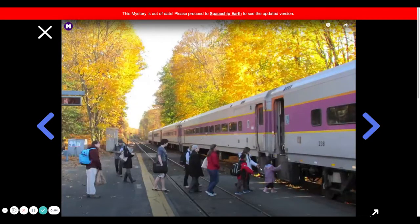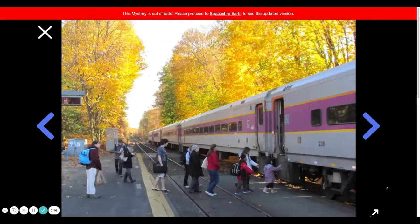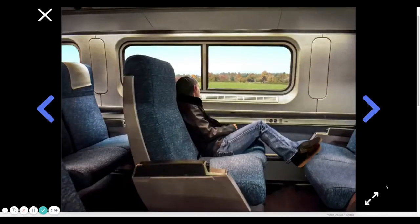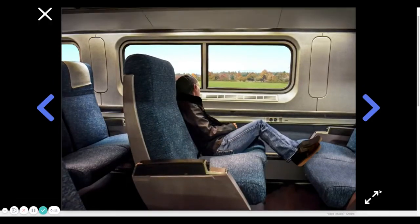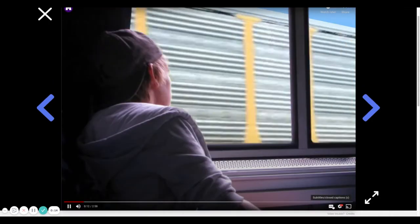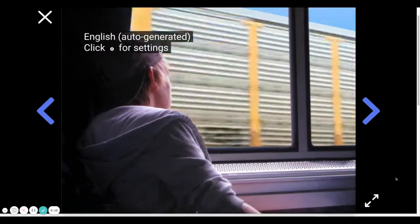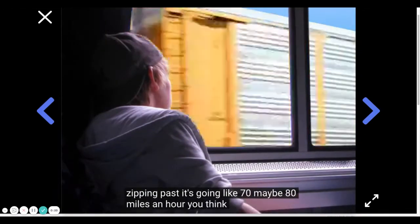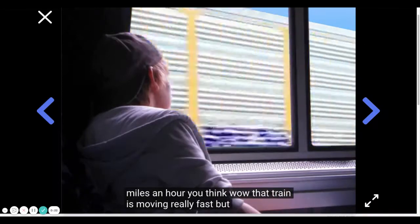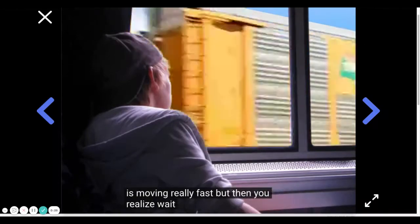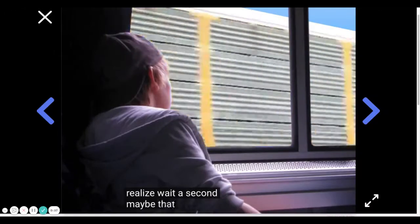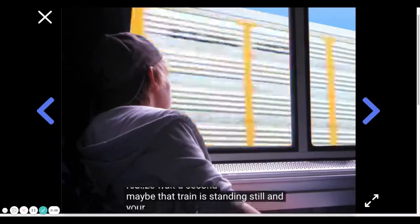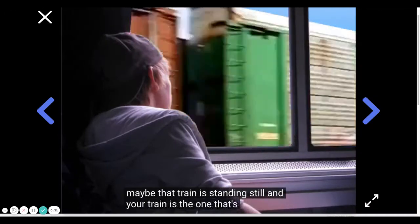Hey, this is Doug. I've got a question for you. Have you ever been on a train? I want you to imagine that you're boarding one. You find a seat, you start taking a little nap, and then at some point you look out the window and see another train on the track next to you just zipping past. It's going like 70, maybe 80 miles an hour. You think, wow, that train is moving really fast. But then you realize, wait a second, maybe that train is standing still and your train is the one that's moving.